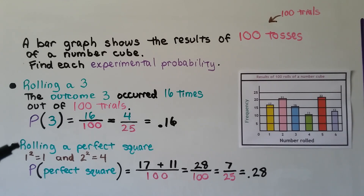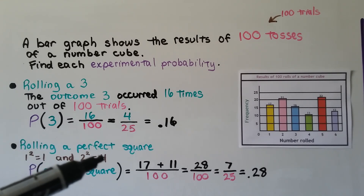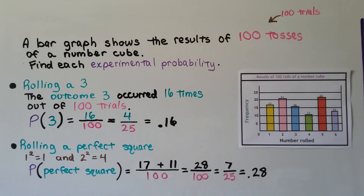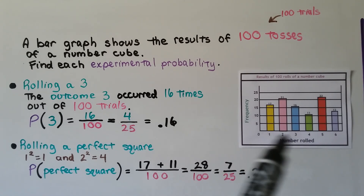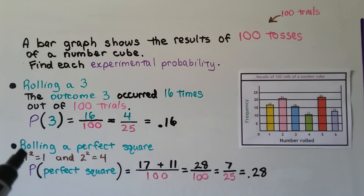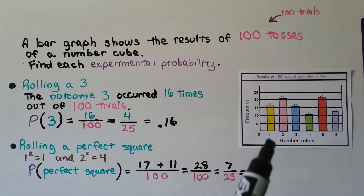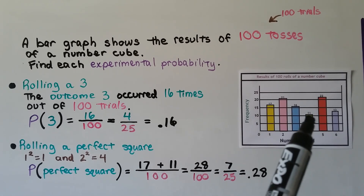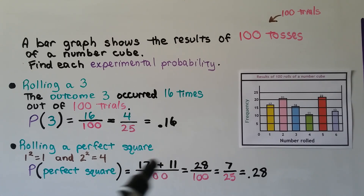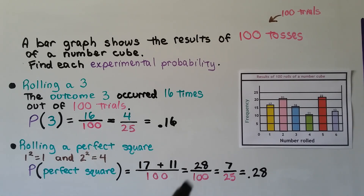What is the probability of rolling a perfect square? A perfect square on this die would be 1 (1 squared) or 4 (2 squared). The 1 happened 17 times and the 4 happened 11 times. Adding 17 plus 11 gives 28 over 100, which simplifies to 7 twenty-fifths, or 0.28 as a decimal.